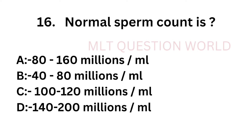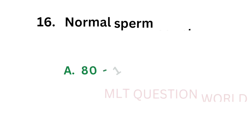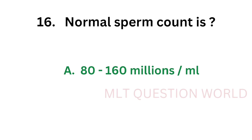Question number 16: Normal sperm count is — option A: 80 to 160 millions per ml, option B: 40 to 80 millions per ml, option C: 100 to 120 millions per ml, option D: 140 to 200 millions per ml. The correct answer is option A, 80 to 160 millions per ml. Normal sperm count is 80 to 160 millions per ml.